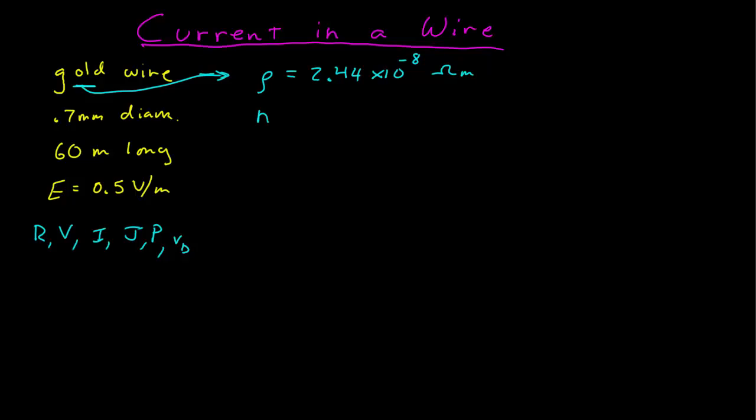We also know that gold has a charge carrier density of 5 times 10 to the 28 particles per meter cubed. So we have this information from the fact that it's gold and things we can look up, as well as now the physical dimensions of the diameter and length.